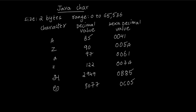For example, capital A has a decimal value of 65 and hexadecimal value of 0041. Capital Z is 90 and hexadecimal 005A. In Tamil, the character Arc is 2949 with hexadecimal value 0B85. And another character is 3077 with hexadecimal value 0C05. In the next video, we will see how hexadecimal values are used in Java programs.